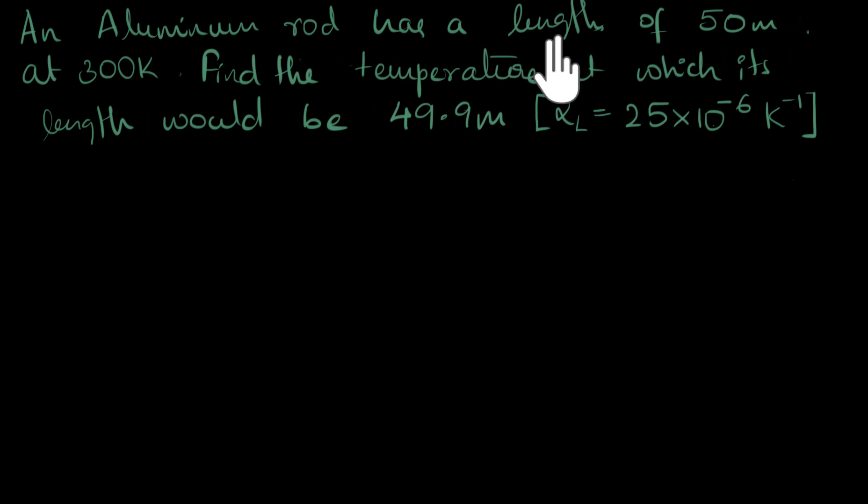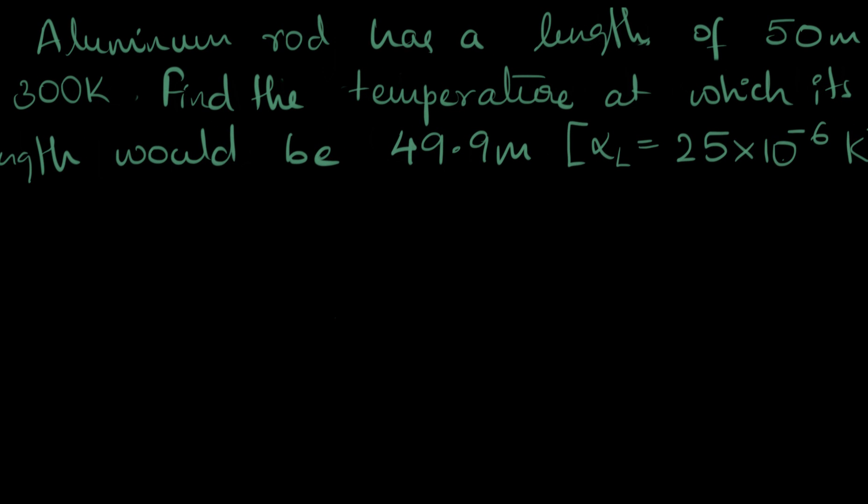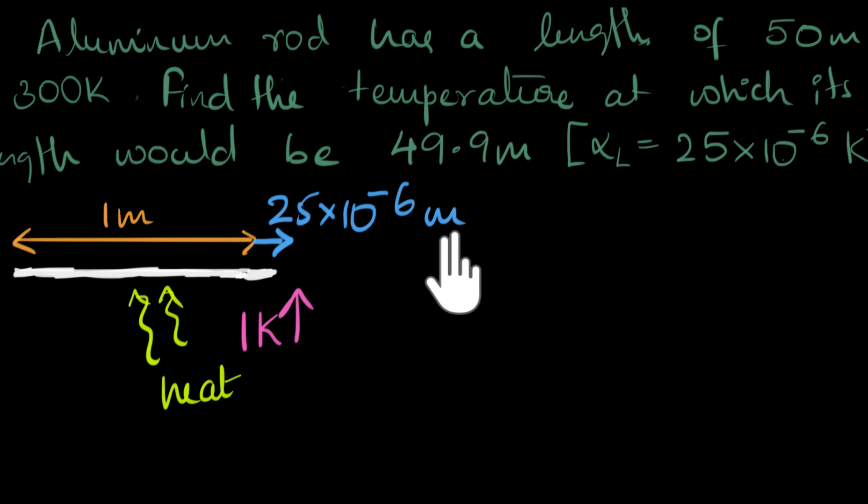Now we might be familiar with most of the data like the length and the temperature, but we might be wondering what is alpha L? What is the meaning of linear expansion coefficient? Well, it just means that if you have an aluminum rod of one meter and you heat it up and increase its temperature by exactly one Kelvin, then the rod would expand by 25 times 10 to the minus 6 meters. That's the meaning of this number.